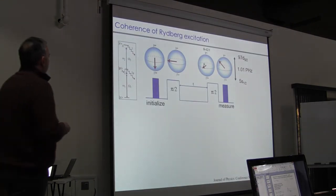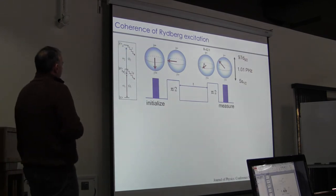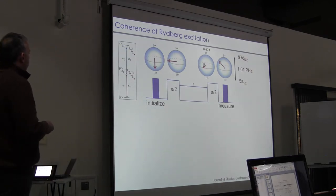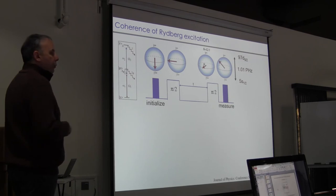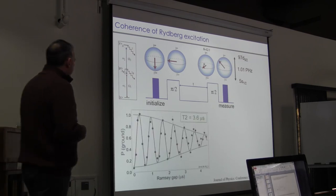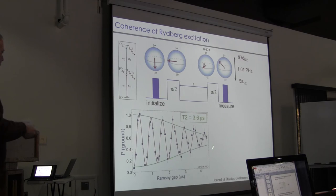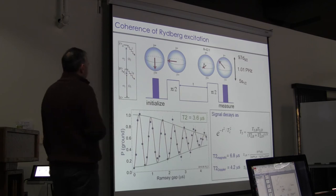We can also check the coherence of the Rydberg excitation by performing a Ramsey experiment between the ground and the Rydberg state. So we start in a ground state. We do a pi by 2 pulse with the Bloch vector on the equator, where now the Bloch sphere is defined as the basis of the ground state and the Rydberg state. We wait a variable time, do another pi by 2 pulse, and then measure the probability in the ground state. And if we do that, we get our Ramsey interference pattern. And this has a decaying envelope, which we can use to define a T2, which in this case is about three and a half microseconds.